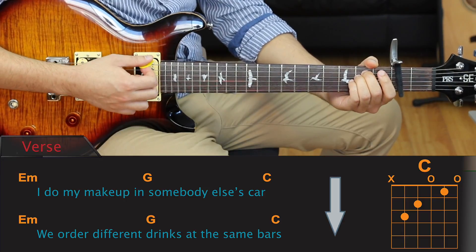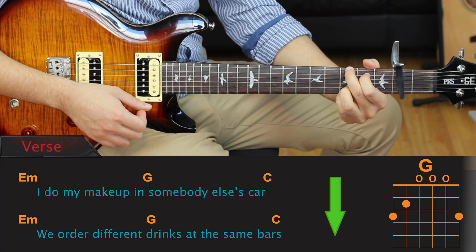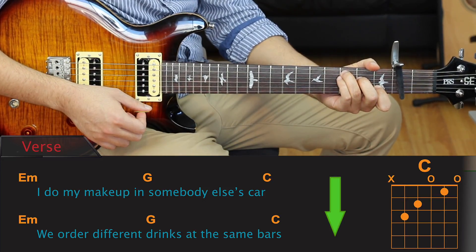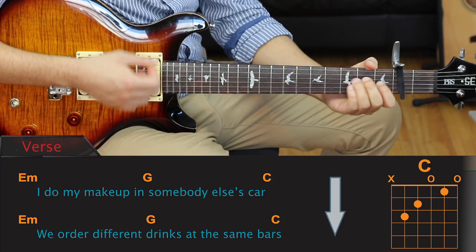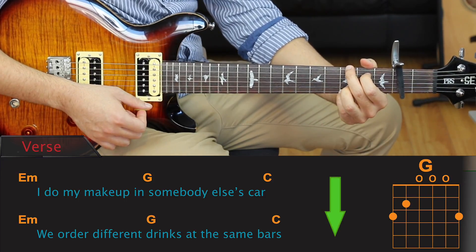Let's give that a try. E minor, I do my makeup in G, somebody else's car, C. E minor, we order different drinks at the same bars.